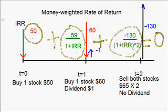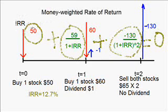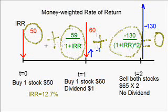This is not easy to solve — you have to use your calculator. The result is IRR equals 12.7%. In summary, to calculate the money-weighted rate of return, remember: first, we incorporate the concept of IRR; second, put all the cash flows on a timeline; and finally, discount them and sum them together, set the total equal to zero, and solve for the IRR.